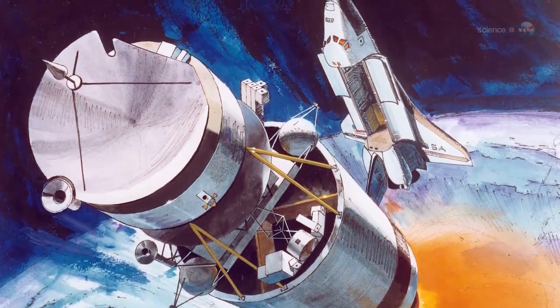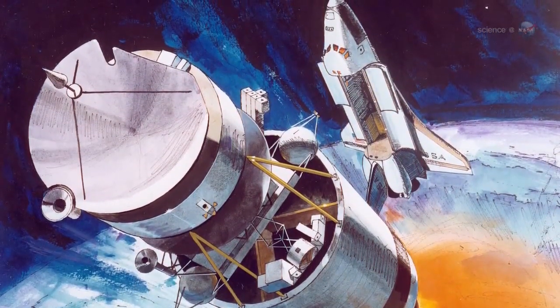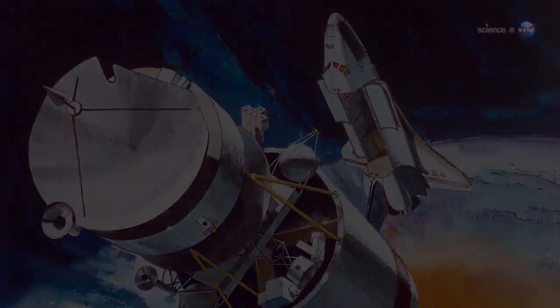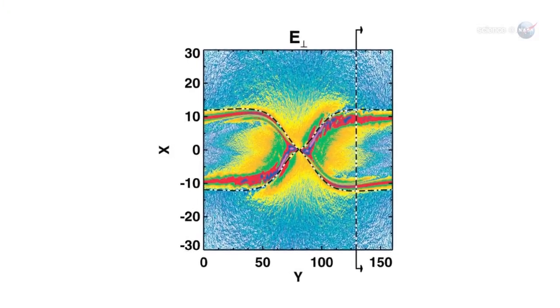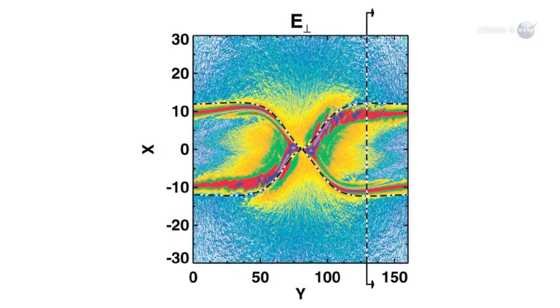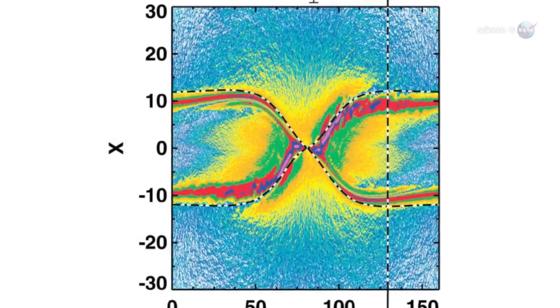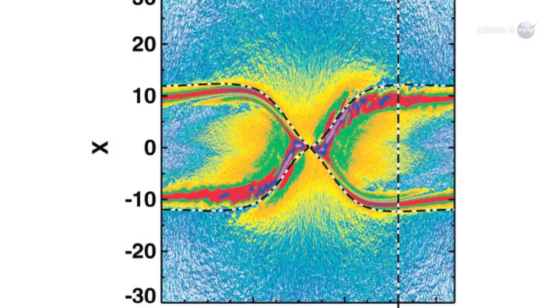Because Polar carried sensors similar to those of MMS, Scudder decided to see how an X-point looked to Polar. Using Polar data, we have found five simple combinations of magnetic field and energetic particle measurements that tell us when we've come across an X-point or an electron diffusion region.